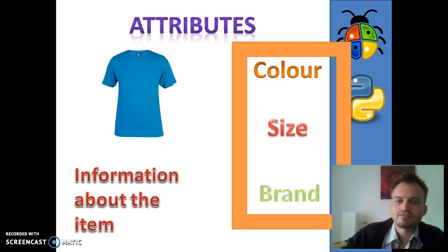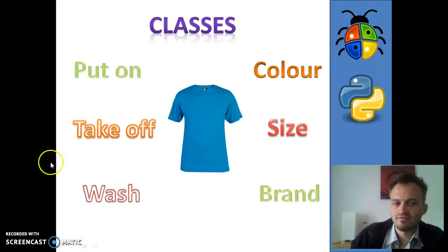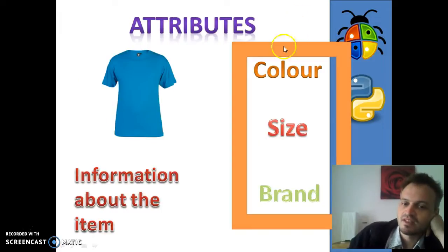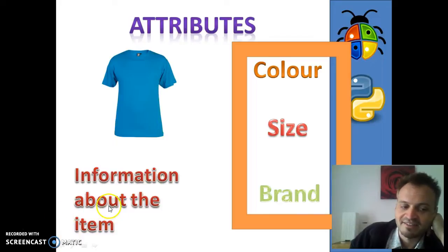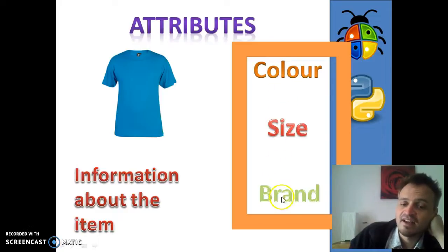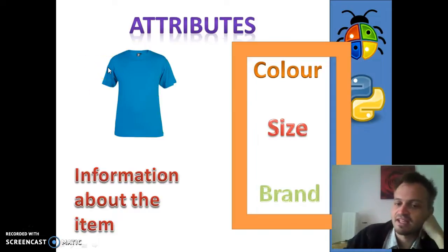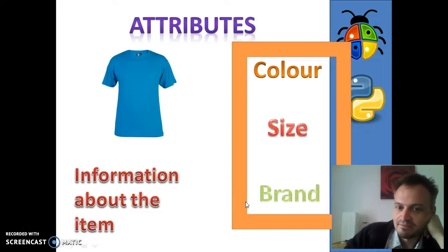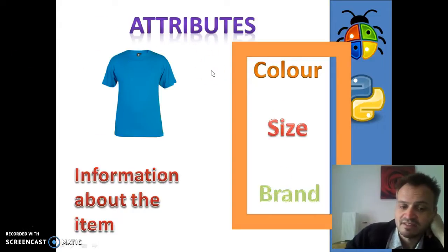Attributes. We have these things for a single class. The attributes are the variables inside of that class — they're contained inside of the class, and you'll see that once we go into the more practical side. For example, we need to know the color, the size, the brand — we would have all of these things.